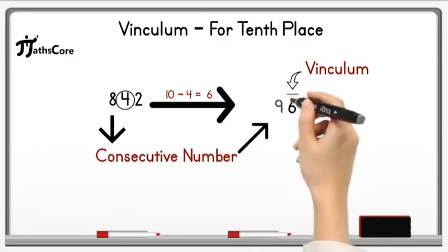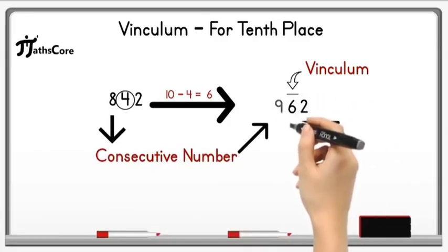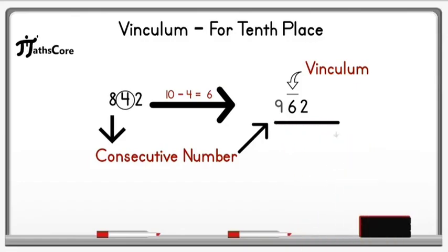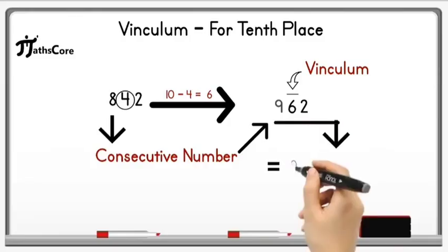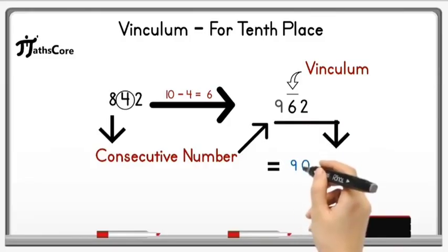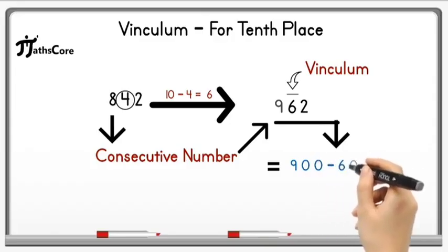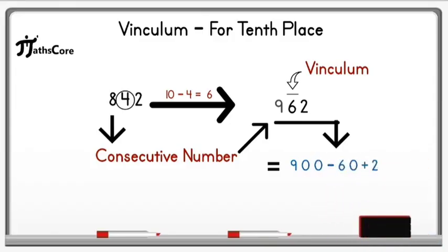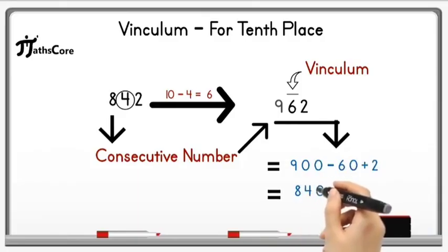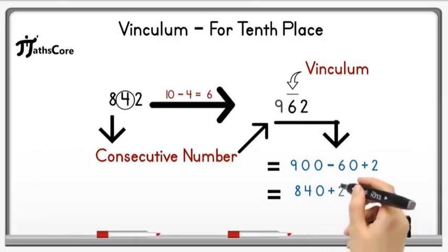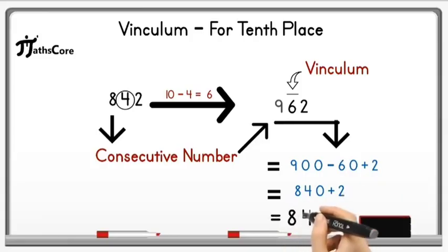Now we have this number and the meaning is: subtract the tens place digit 6 from the hundreds place digit 9 and add the unit place digit 2. The place value of 9 is 900 minus the place value of 6, which is 60. 900 minus 60 is 840, and 840 plus 2 equals 842, which is the given number.